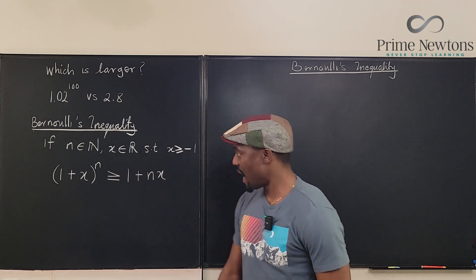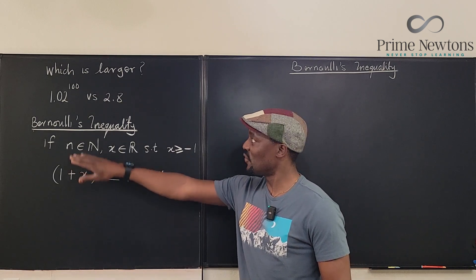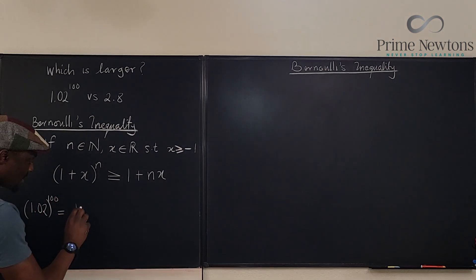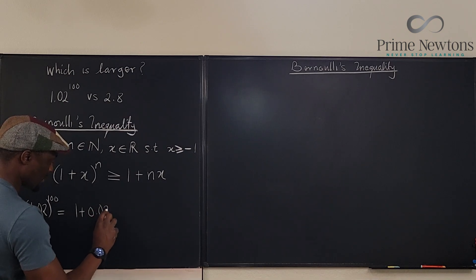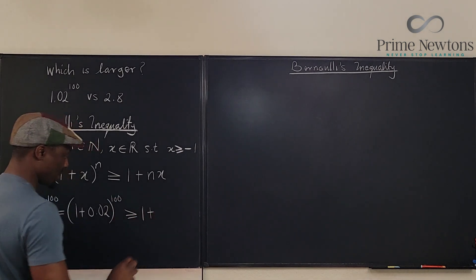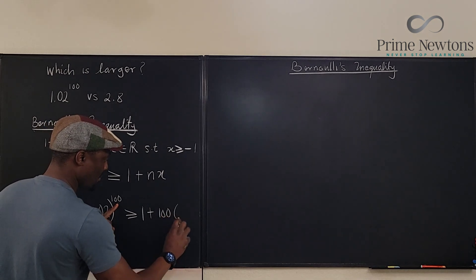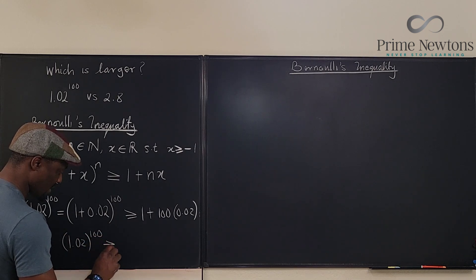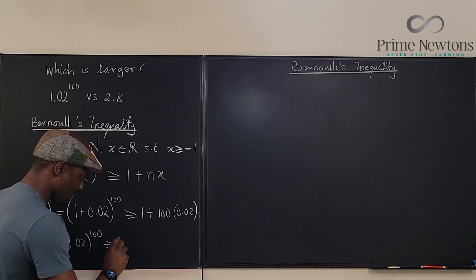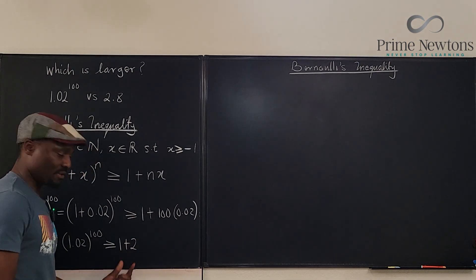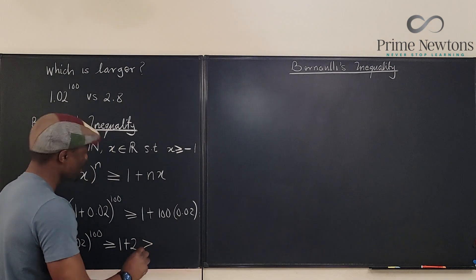Just by looking at this inequality you can answer the question. We write 1.02 raised to the power 100 as 1 plus 0.02 raised to the power 100. By Bernoulli's inequality, this is greater than or equal to 1 plus 100 times 0.02. That gives us 1 plus 2, which equals 3, and 3 is greater than 2.8.